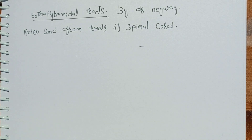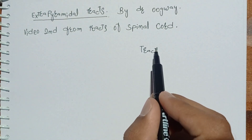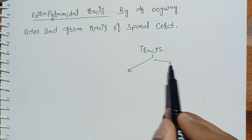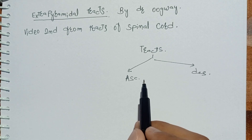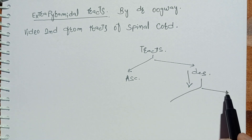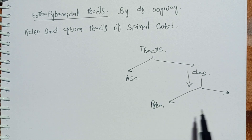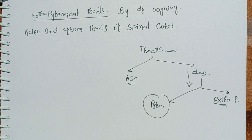Welcome, students. Today I bring you the video on extrapyramidal tracts — this is the second video from the tracts playlist. So far we've studied what tracts are. These tracts can be divided into two types: ascending tracts, which go towards the brain, and descending tracts, which start from the brain and go towards the spinal cord. Descending tracts are further of two types: pyramidal tracts and extrapyramidal tracts. We studied pyramidal tracts in the previous lecture; in this video we'll study extrapyramidal tracts.